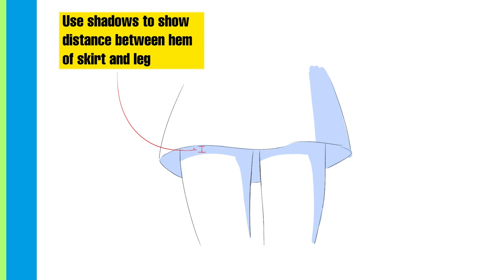The wider the dress, the more distance between the hem of the dress and the legs, and therefore the longer the shadow. This same principle applies for the sleeves of shirts, for example.